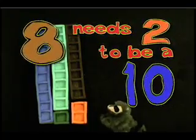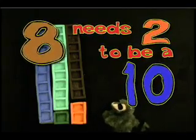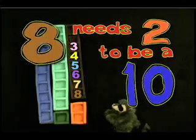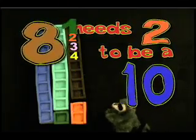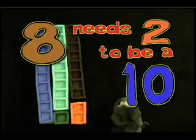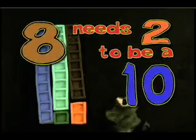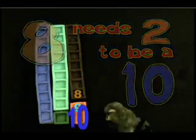You know, it's awfully pretty too. One, two — one, two, three, four, five, six, seven, eight — one, two, three, four, five, six, seven, eight — one, two — one, two, three, four, five, six, seven, eight, nine, ten. See that — eight wants to be a ten and he needs a two. Or could be a she, you can't tell. One, two, three, four, five, six, seven, eight, nine, ten. That's it — 8 and 2 is the same thing as 10.